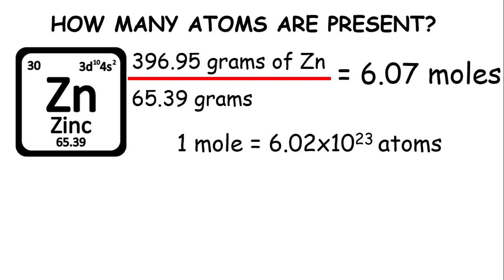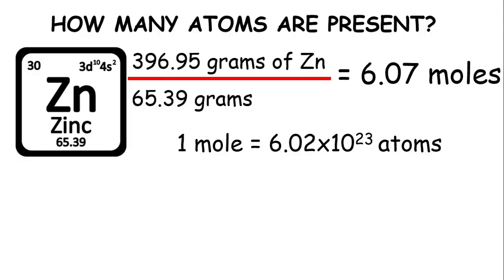Now how do we get the number of atoms? Again, we have the number of moles. Remember that one mole is equal to 6.02 times 10 to the 23rd power, or Avogadro's number. So what we need to do is to use the relationship between the two to get the number of atoms. This is done by using dimensional analysis. Let's recall dimensional analysis. So we have 6.07 moles of zinc.